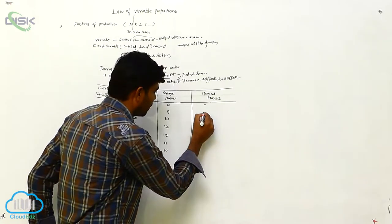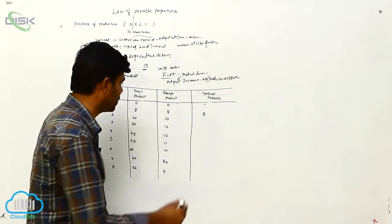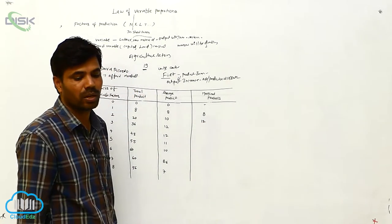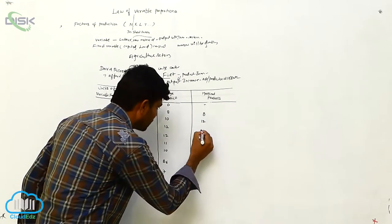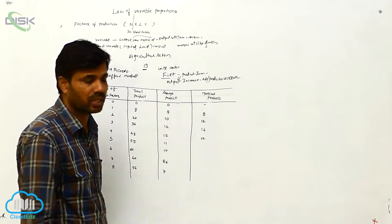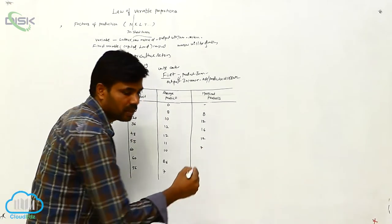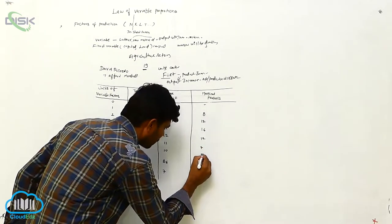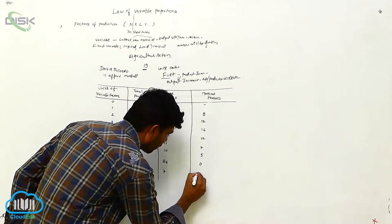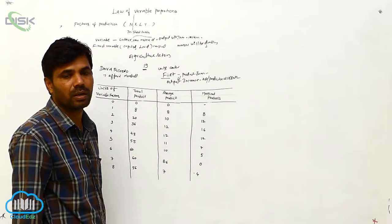So next is 8. Next is 12. Next is 16. And then 12. Next is 7. Next is 5, 0. And then minus 4. This is the stage.